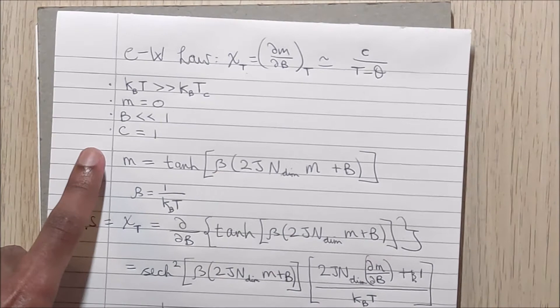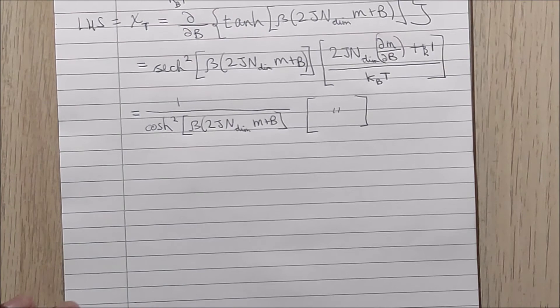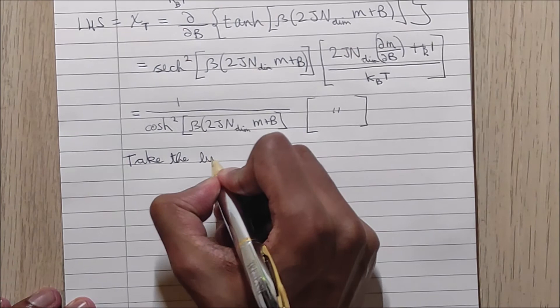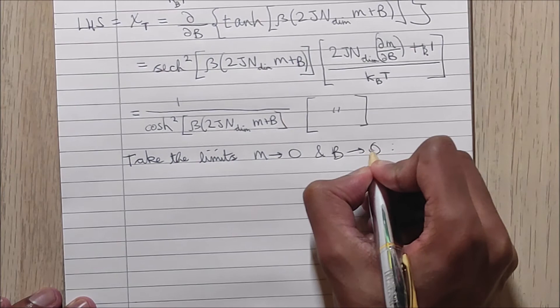Now we're going to go back to our assumptions above, so I'm going to take the limits as M tends to zero and also as B tends to zero.